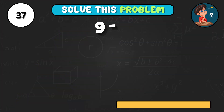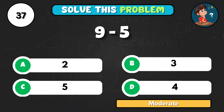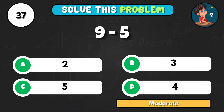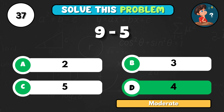What happens when you subtract 5 from 9? The result is D4.